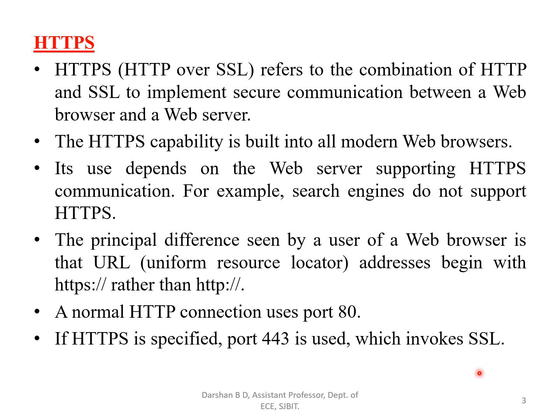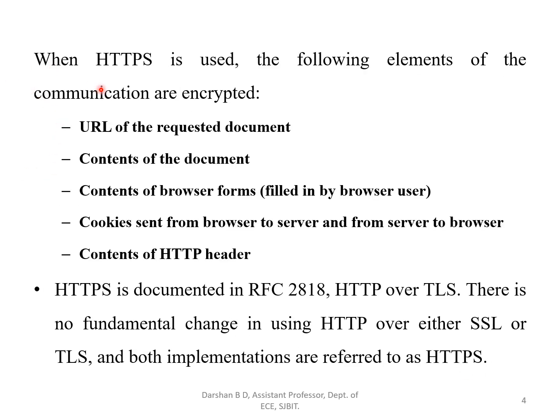Port 443 invokes the Secure Socket Layer as well. When using Hypertext Transfer Protocol for secure purposes, the following elements are encrypted: first, the URL of the requested document — that URL will be encrypted. Next, the content of the document is also encrypted.